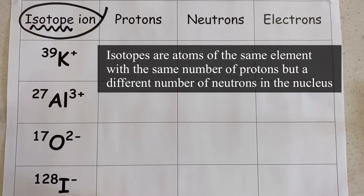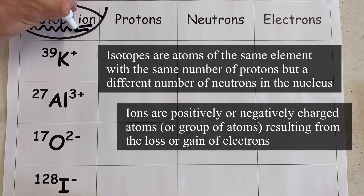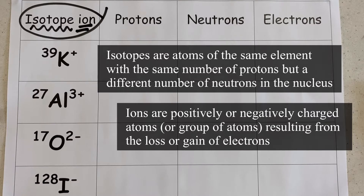We're going to start by reviewing our definitions. Isotopes are atoms of the same element with the same number of protons but a different number of neutrons in the nucleus. And ions are positively or negatively charged atoms resulting from a loss or gain of electrons.